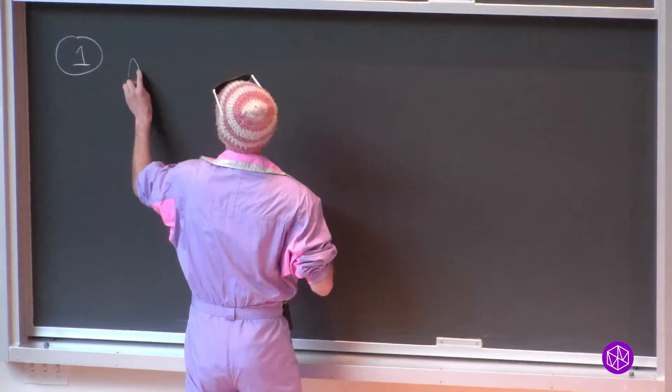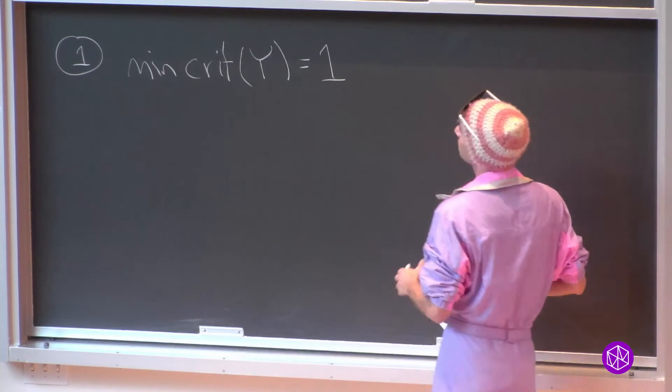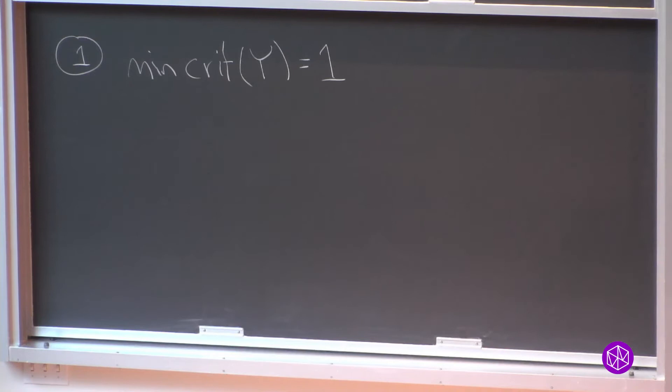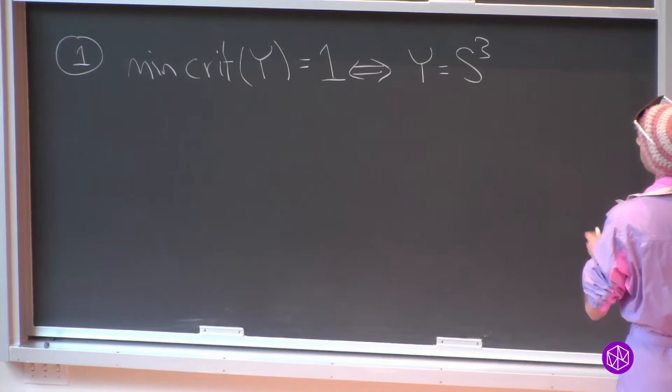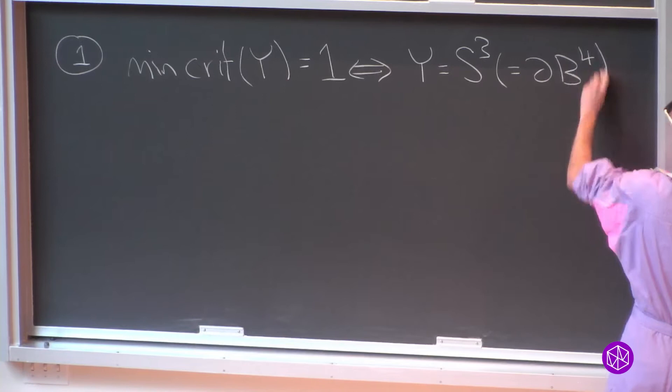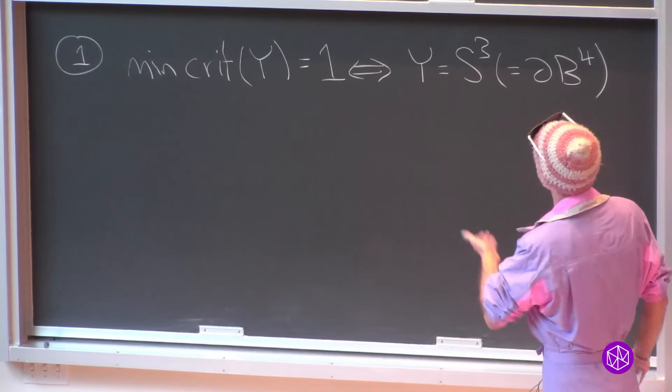So we know Y is a closed, connected, orientable 3-manifold. We know it bounds some nice smooth 4-manifold, and we want to ask how simple that 4-manifold could be. Maybe I'll define some notation: min crit of Y is the minimal number of critical points of some Morse function. Let's do an example and start with very low numbers of min crit.